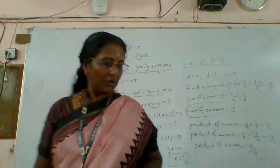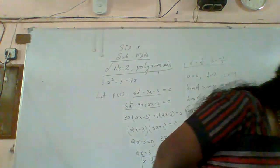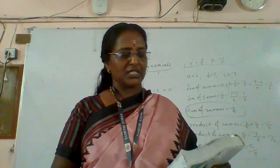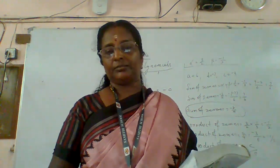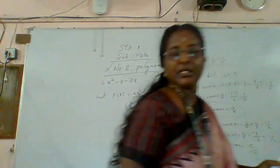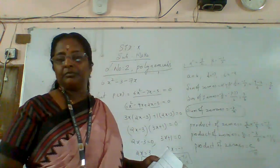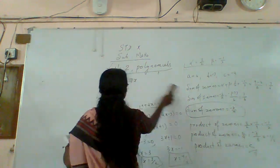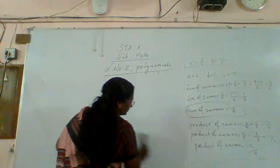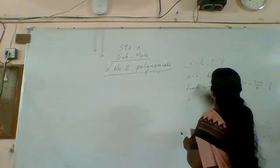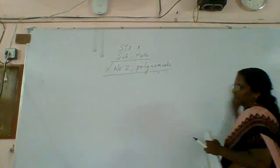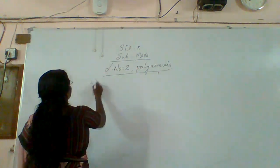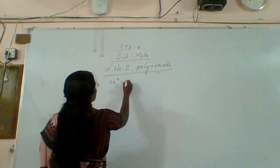I have explained and given three sums — first, second, and third. Four and five are homework. We will also explain the sixth sum. Question number six: three x square minus x minus four.